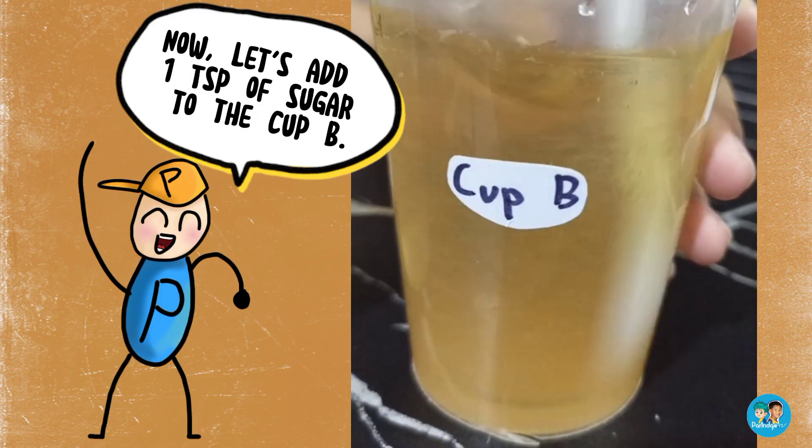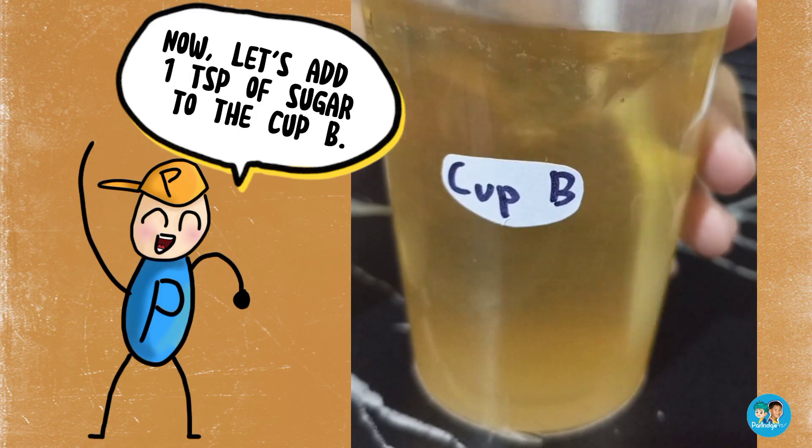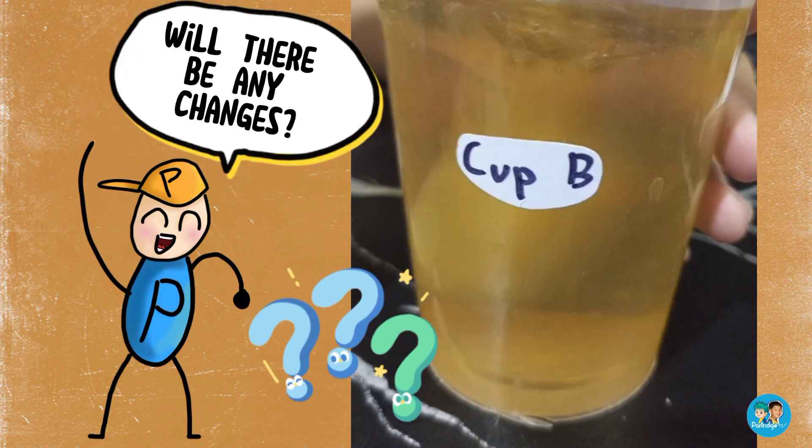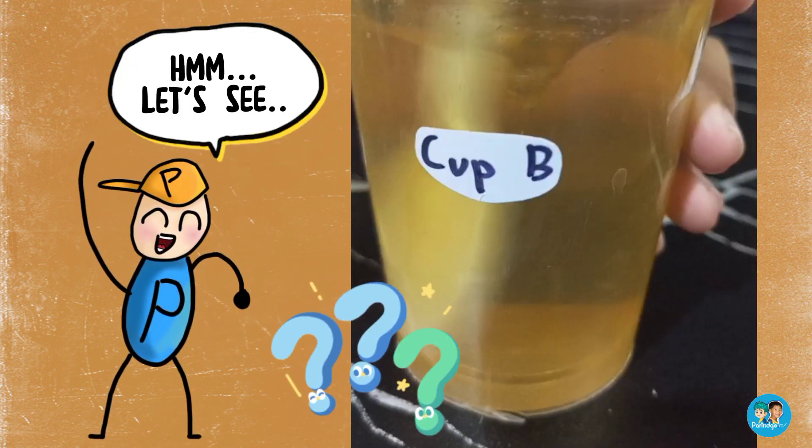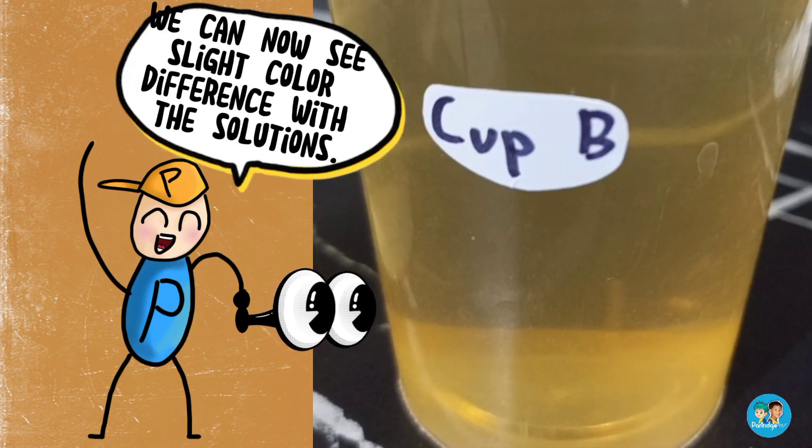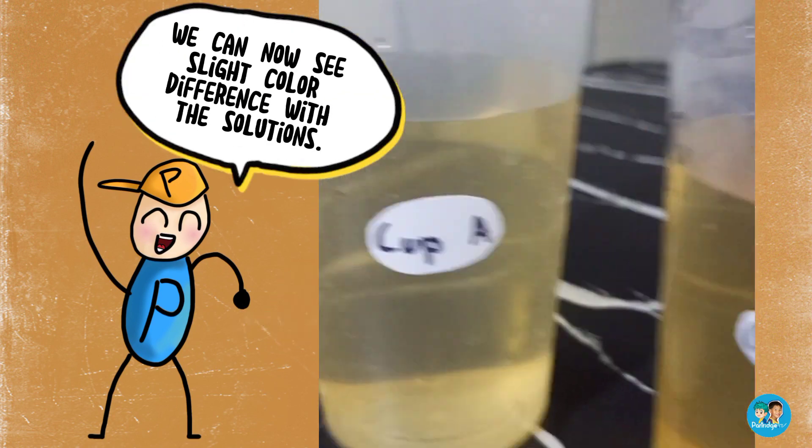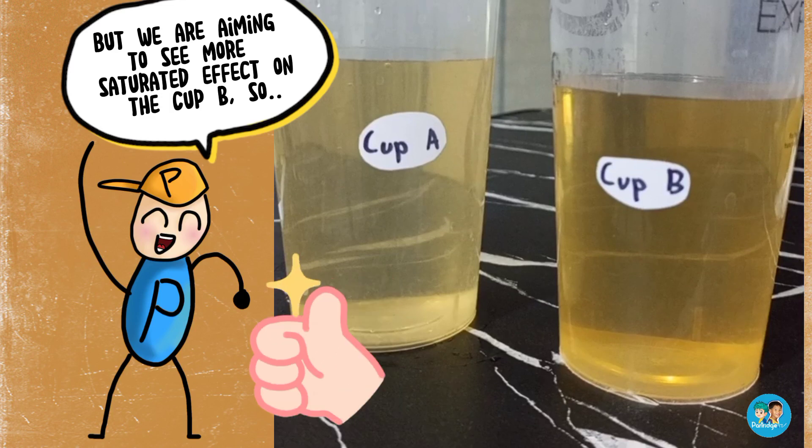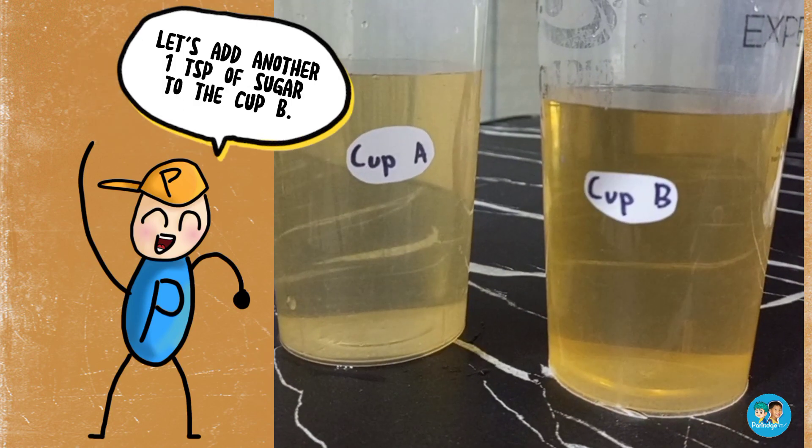Now let's add 1 teaspoon of sugar to cup B. What do you think will happen? Will there be any changes? Let's see. We can now see slight color difference with the solutions. But we are aiming to see more saturated effect on cup B.